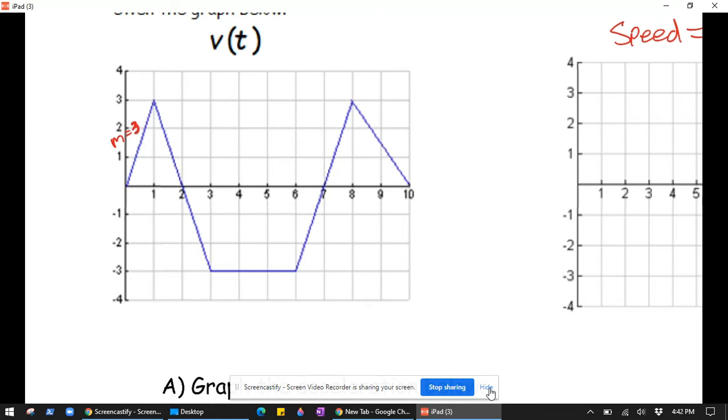And then on the interval from 1 to 3, the slope is negative 3. Then the slope is 0.